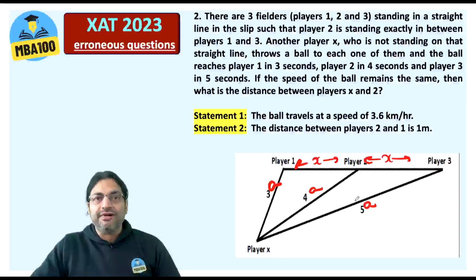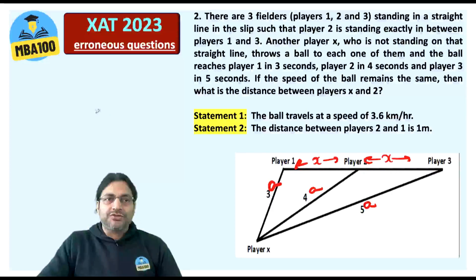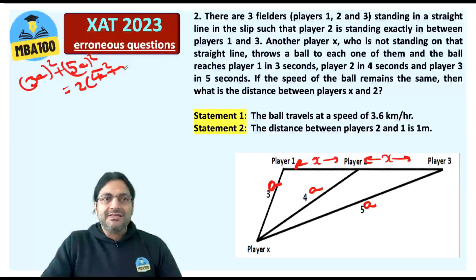I'm sure all of you are aware of Apollonius's theorem, that is on the median of a triangle. So 3A² + 5A² would be equal to 2 times of 4A² + X².